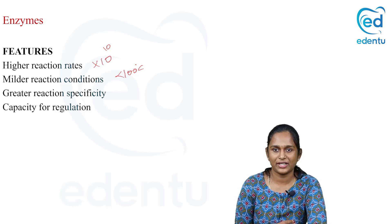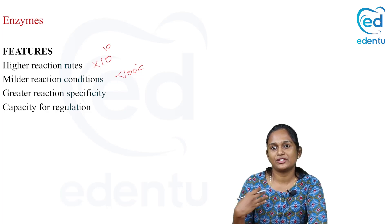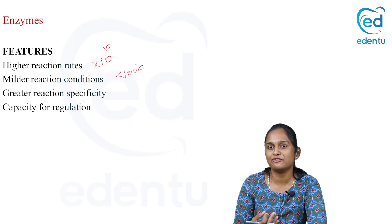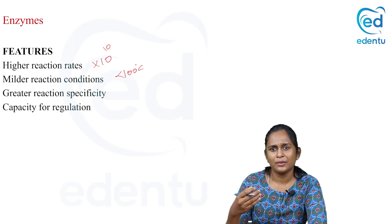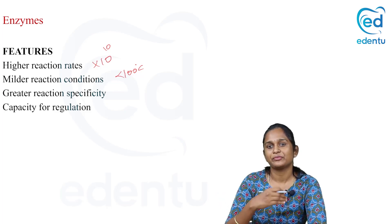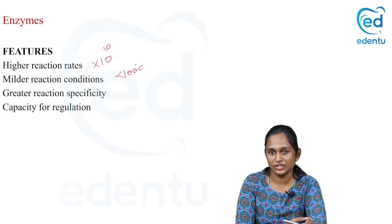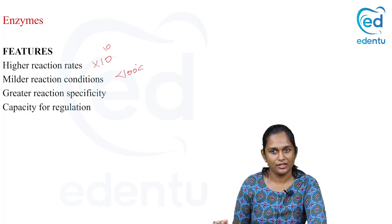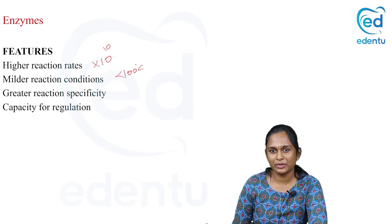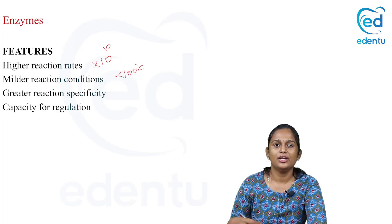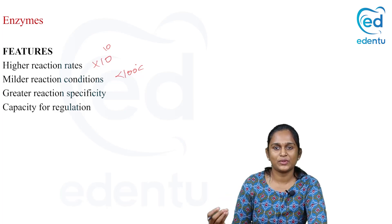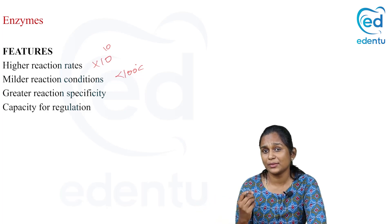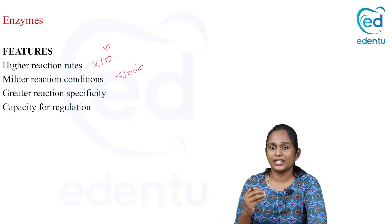If there is no enzyme, you have to provide heat or other forms of energy. But when the enzyme is present, that much energy is not required. The enzyme can act with minimum requirements — minimum temperature, minimum atmospheric pressure, minimum pH. So it basically requires only very minimal standard conditions.